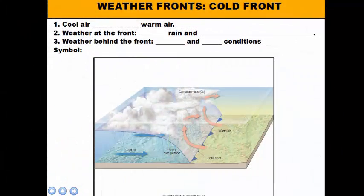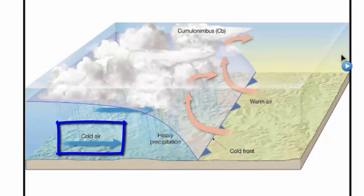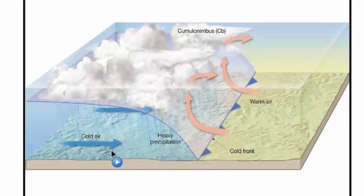Here we have a picture of a cold front. To identify a front, one way is to look at the body of air moving into an area. A warm front or cold front is named after the temperature of the air moving in. So here on the left we have our pocket of cool air and on the right our pocket of warm air, with the cool air advancing from left to right.